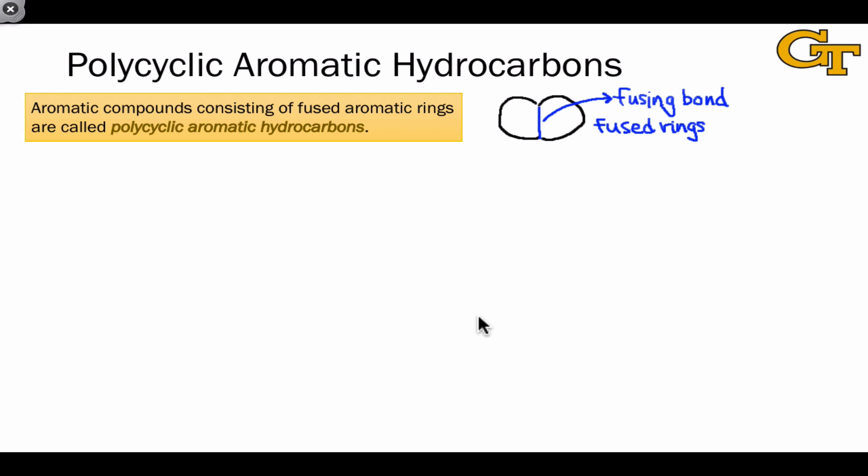We can distinguish two classes of polycyclic aromatic hydrocarbons: the so-called benzenoids, which consist of fused benzene rings, and the non-benzenoid compounds, which consist of rings that are larger or smaller than the six-membered benzene ring.